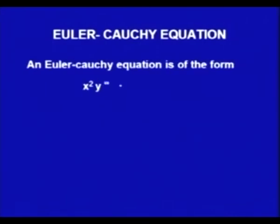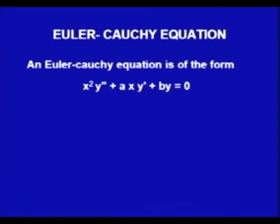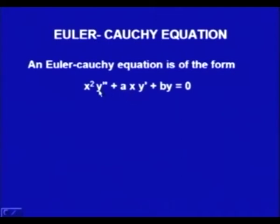An Euler-Cauchy equation is of the form x² y'' + ax y' + b y = 0. This is a second order linear differential equation where the coefficient of y'' is x², the coefficient of y' is ax, and the coefficient of y is b. Here a and b are constants, but the coefficients of y' and y'' are functions of x, not constants.